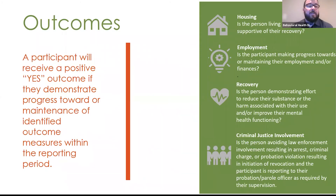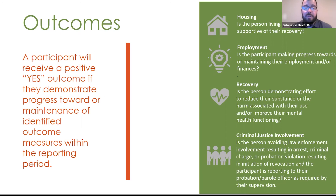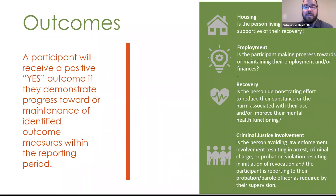A participant will receive a positive or yes outcome if they demonstrate progress toward or maintenance of an identified outcome measure within the reporting period. The reporting periods are different for each program: Free Through Recovery runs from the 21st of the month through the 20th, and Community Connect runs for the calendar month. So you must consider what is taking place during that actual reporting period. In the four areas that we assess, housing is whether the person is living in a residence that is supportive of their recovery.